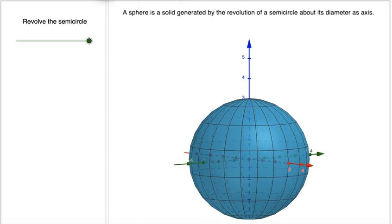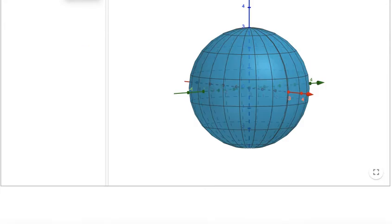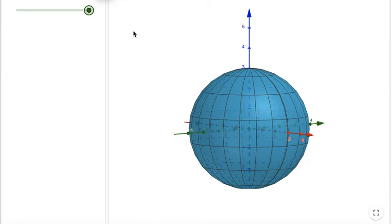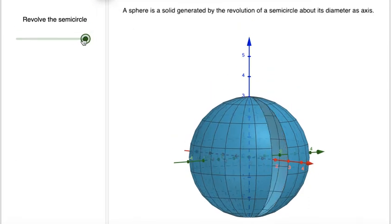A sphere is a solid generated by the revolving of a semicircle about its diameter as axis. Now you have control so you can change this. Revolve this circle.